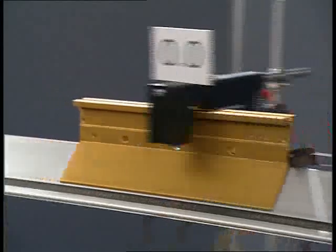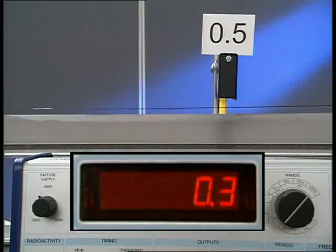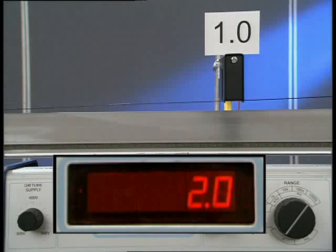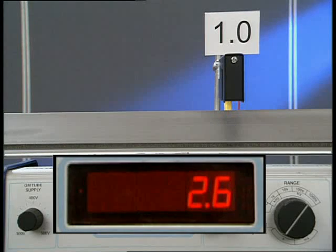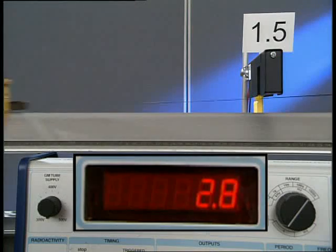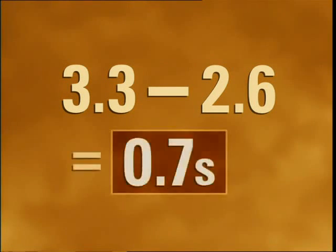As the vehicle passes through the first gate, all the timers start. As it passes through the next light gate, the first counter stops, and then the second, and then the third. The timer reads 1.8 seconds at the start of the next half meter, and 2.6 at the end. To travel the second half meter, it took 2.6 minus 1.8, which is 0.8 seconds. To travel the third half meter, it took 3.3 minus 2.6, which is 0.7 seconds.